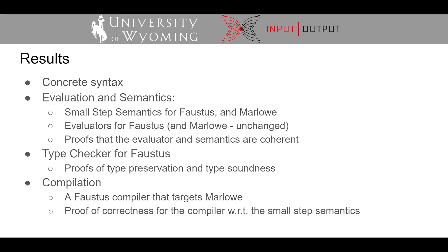Finally, we have developed a Faustus compiler that targets Marlowe. This means a program written in Faustus can be parsed, type checked, compiled, and executed on any blockchain that supports Marlowe. We have formally verified the compiler with respect to the small-step semantics as well.